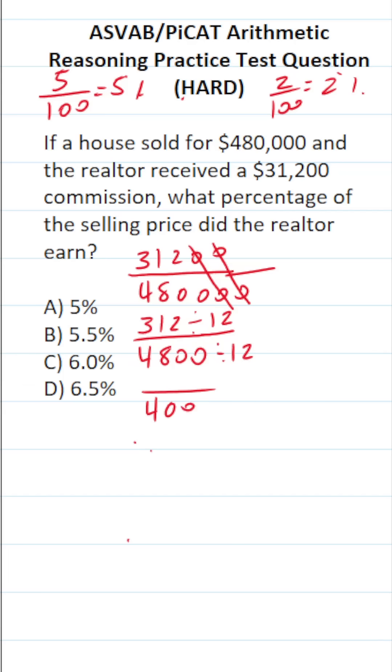So 4,800 divided by 12 is going to be 400. And if you can't see that 312 is divisible by 12, you could always do the long division. 12 goes into 31 two times without going over. 12 times 2 is 24. 31 minus 24 is going to be 7. Drop down this 2. 12 times 6 is 72 with no remainder.